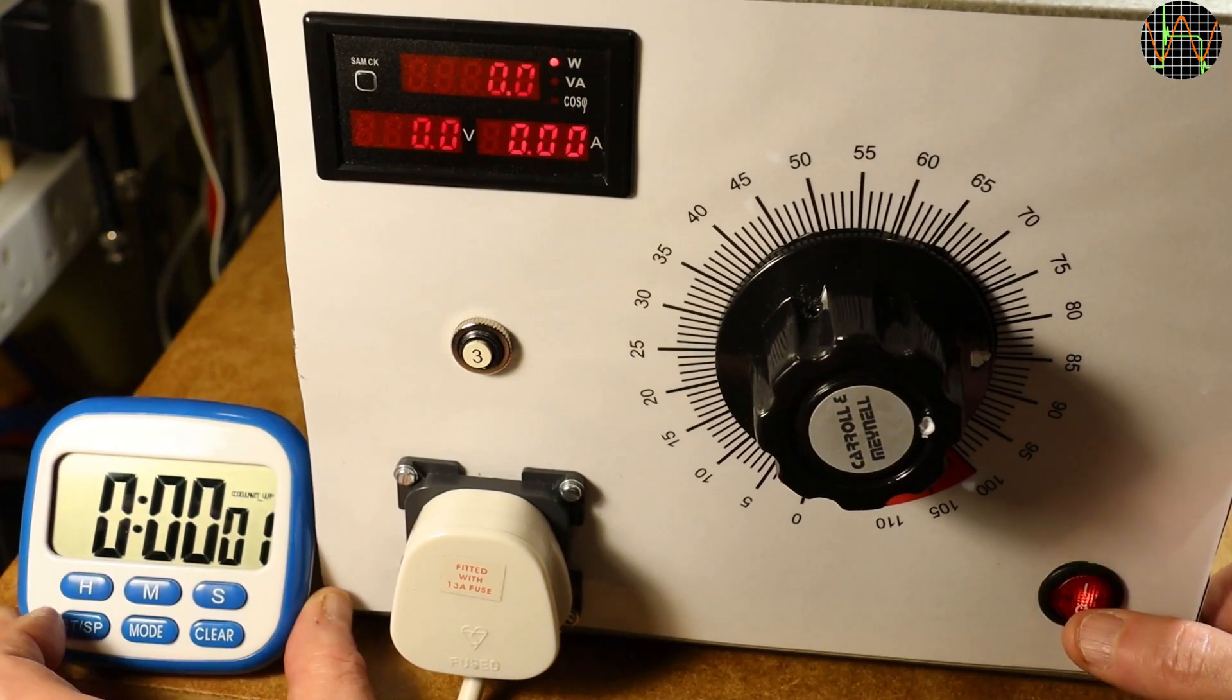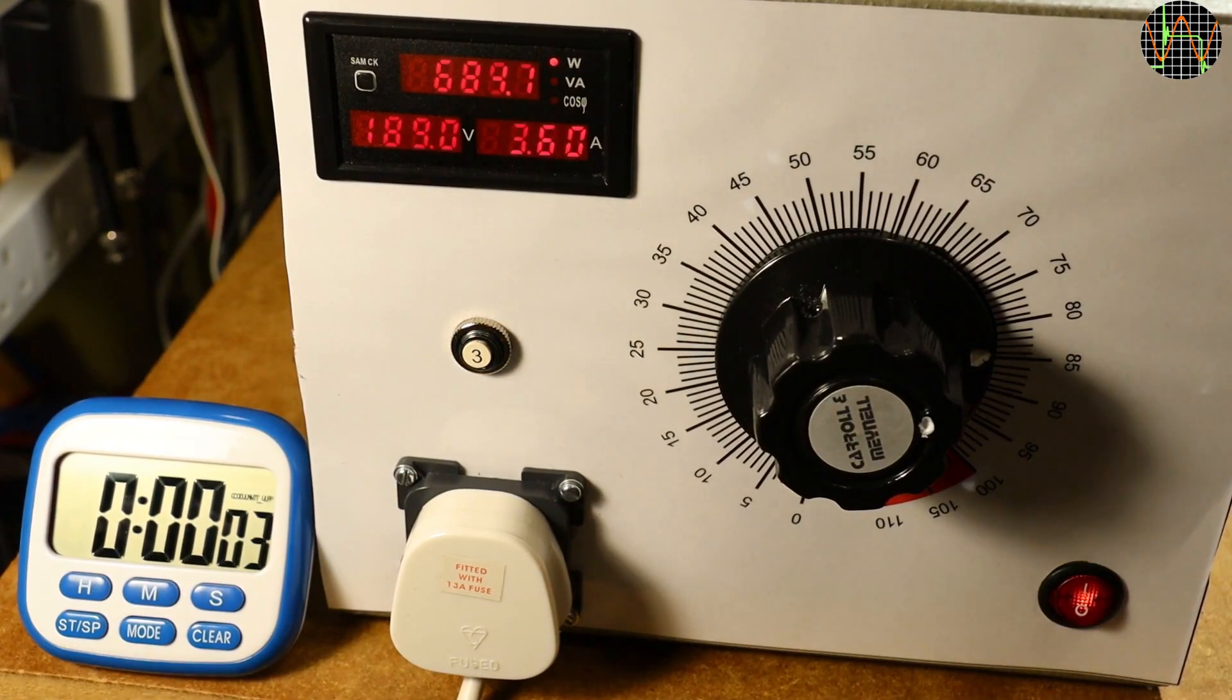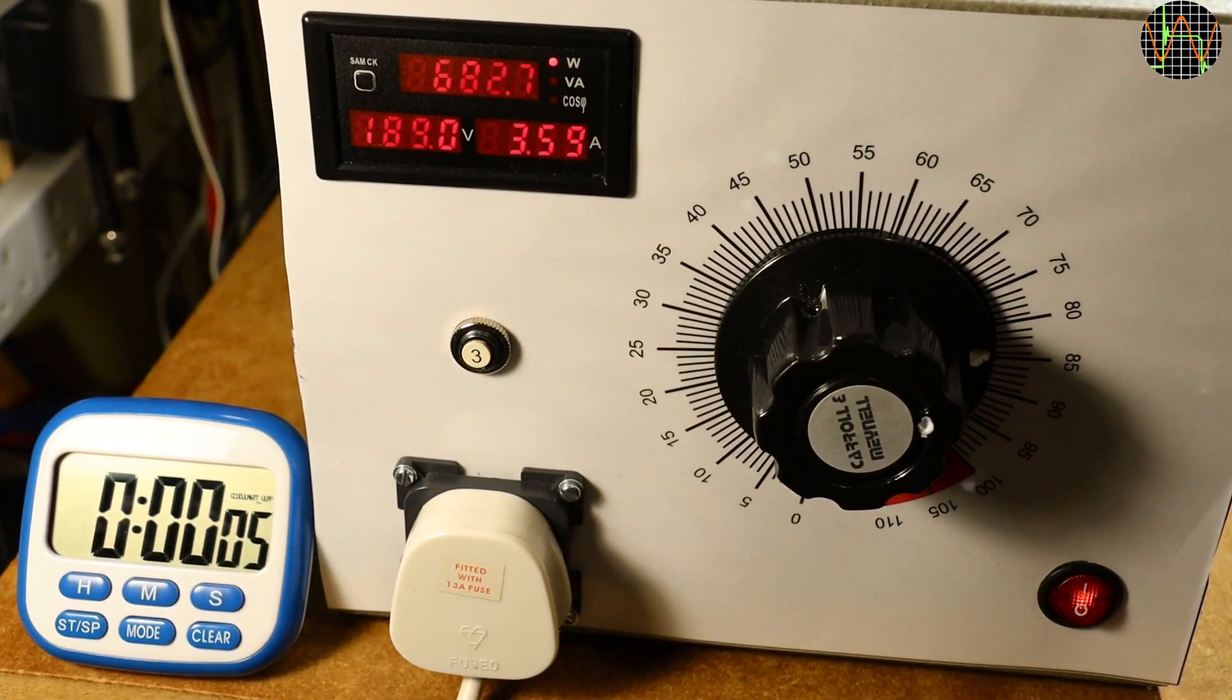As a full load test, I connected the fan heater to the output. That would nominally exceed the rating of the transformer so I reduced the voltage a little to stay just at about the 3.5A mark. This load should eventually trigger the 3A circuit breaker and I am using the stopwatch to test how long that takes.